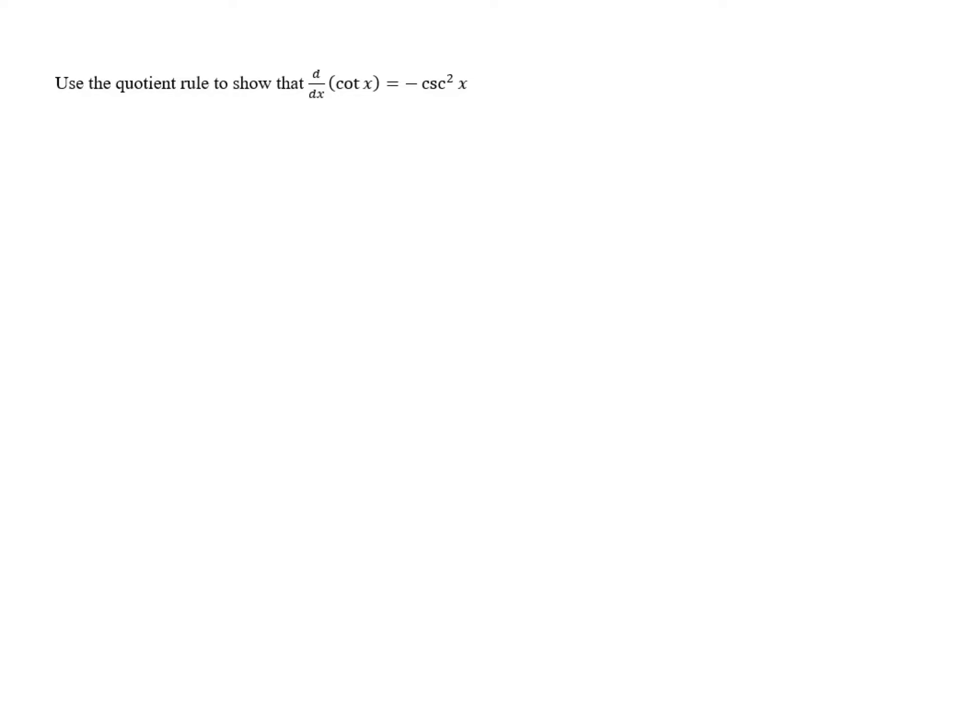Use the quotient rule to show that the derivative of cotangent of x equals negative cosecant squared of x. So if we want to use the quotient rule to figure out the derivative of cotangent of x, we need to express it as a quotient.